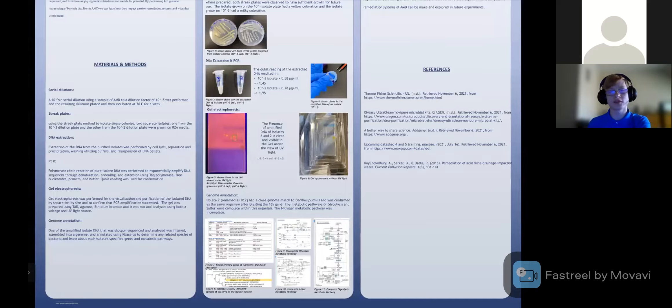I will now go on to explain the materials and methods that were utilized in this experiment. The first thing that was done was we took a sample of AMD and utilized serial dilution to a factor of 10 to the negative 5th and then incubated this for a week. This was of course followed up by performing streak plates to isolate single colonies. In order to do this we utilized the 10 to the negative 3 and 10 to the negative 2 dilution plates because they had the most easily accessible growth.